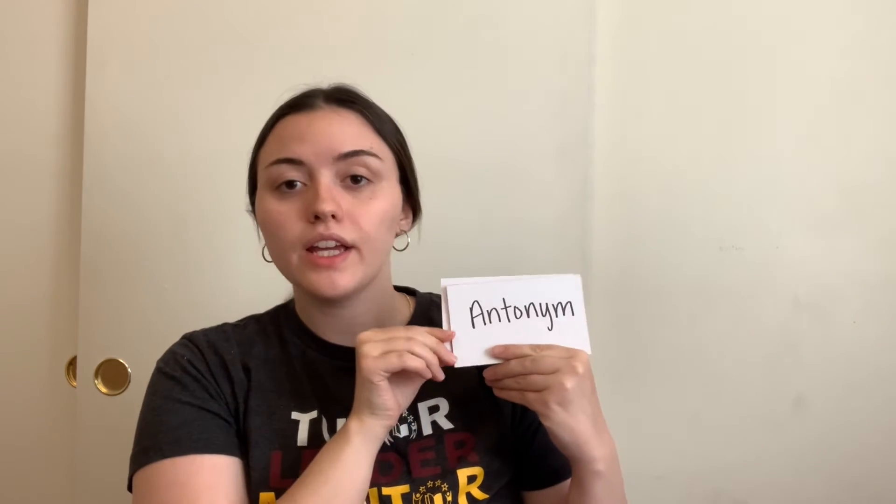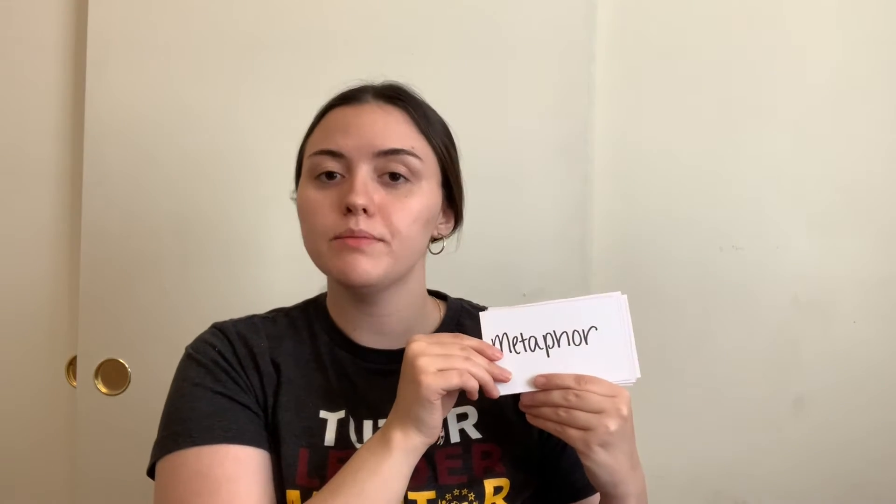On the first 11 cards, title them the different types of figurative language and word relationships. Your first card: synonym. Second: antonym. Next: homonym. Then part to whole. Then rhyme. Then simile. Next: metaphor. Next: hyperbole. Title your next card idiom. Your next one imagery. And your last card personification.